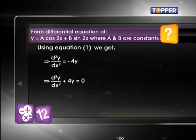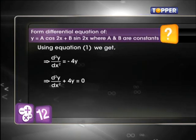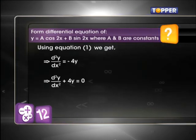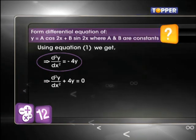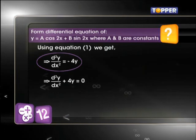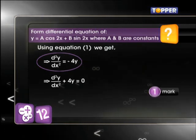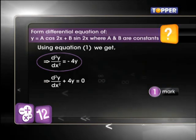By using equation 1, we get d²y/dx² = -4y. This implies that d²y/dx² + 4y = 0. We now have an equation devoid of the unknown constants and this is our required solution.